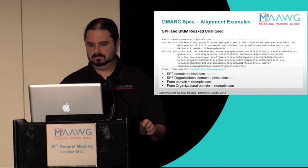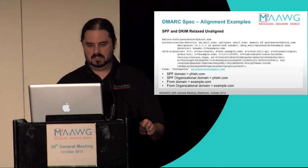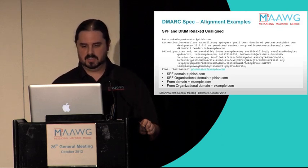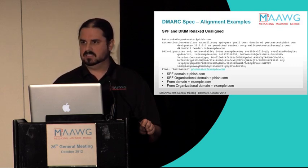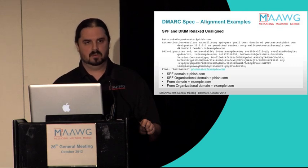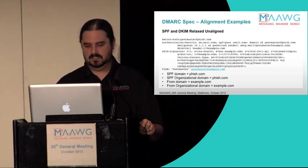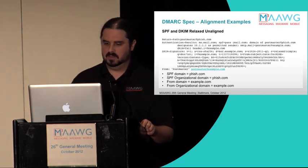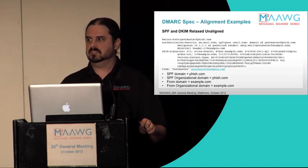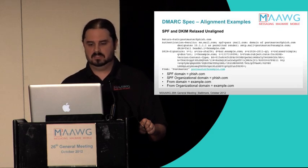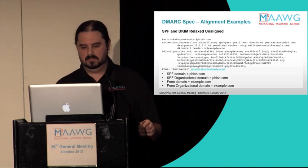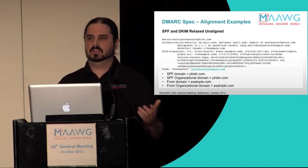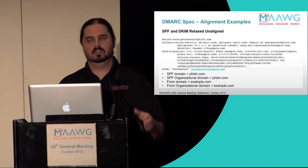Here's the phishing example again. The MAIL FROM in the return path is phish.com, and SPF passes. The email is signed by bar.example.com with DKIM, which fails. The From is example.com. So we have a single authenticated identifier from SPF with domain phish.com, which has an organizational domain of phish.com. The From domain is example.com — they don't match and don't share the same organizational domain. Therefore this email is unaligned.